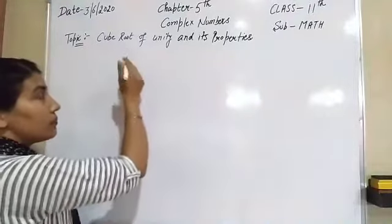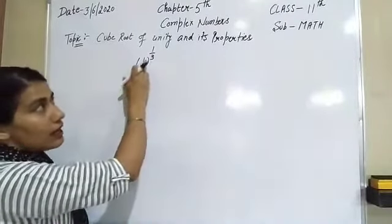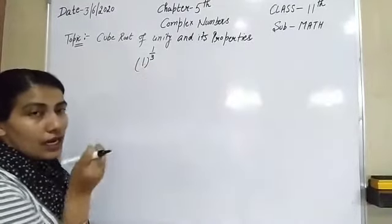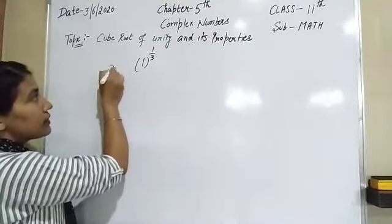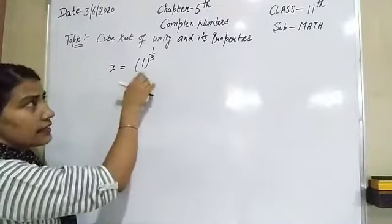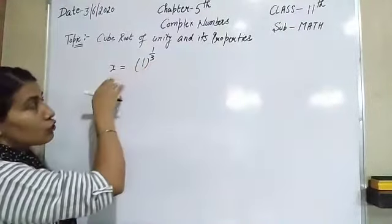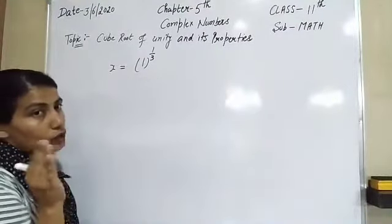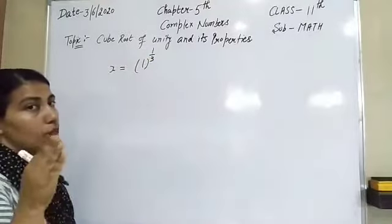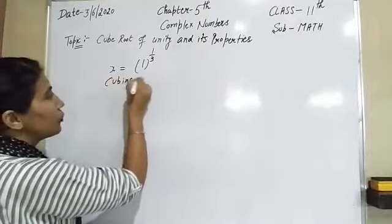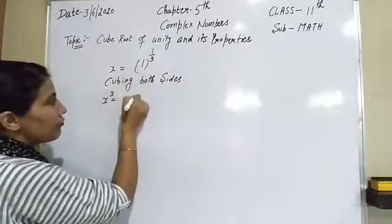Firstly, what are the cube roots of unity? That means what are the roots of unity — unity means one — and we have to find what are the roots of this cube root of unity. Let us say the cube root of 1 is equal to x. Now here is the cube root symbol, so we will do cubing on both sides. Whenever we have a cube root, we do cubing on both sides.